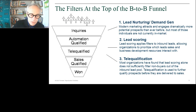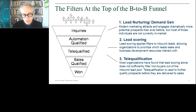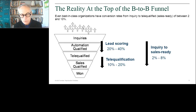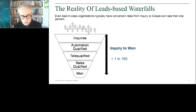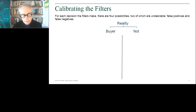Here's a very simplified version of the waterfall: it starts with inquiries at the top, you have automation that qualifies them, a telequal team, a sales team. Think of each stage as a filter — it lets through some things and filters out others. How it does that job is the subject of lead scoring. The reality is that filters filter out almost everything. Inquiries getting to a sales-ready stage is usually around two or three percent, and going all the way to closed-won is less than one percent for almost all of you.